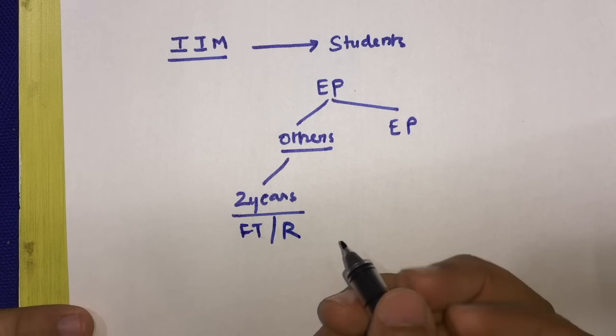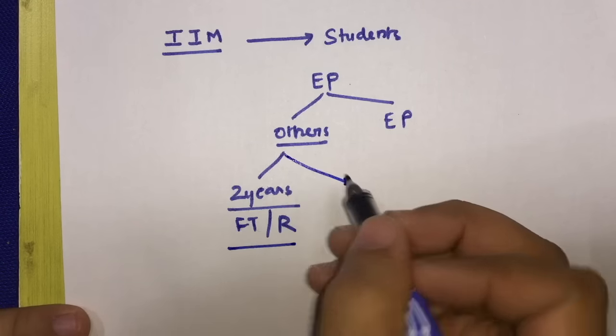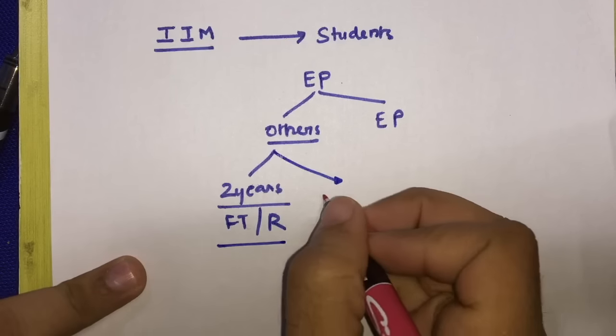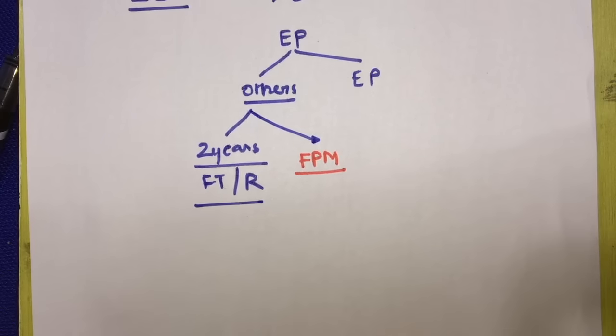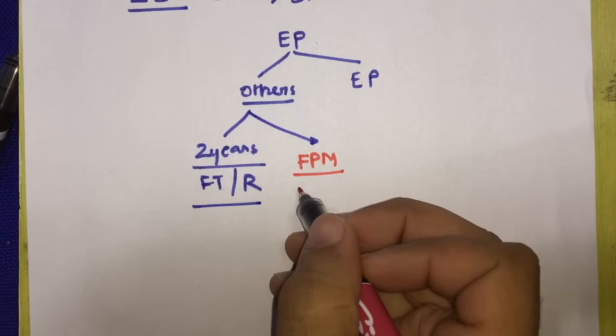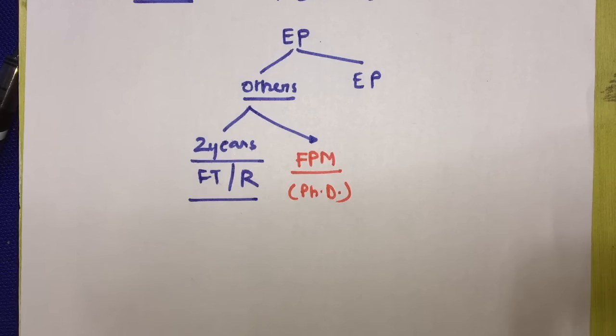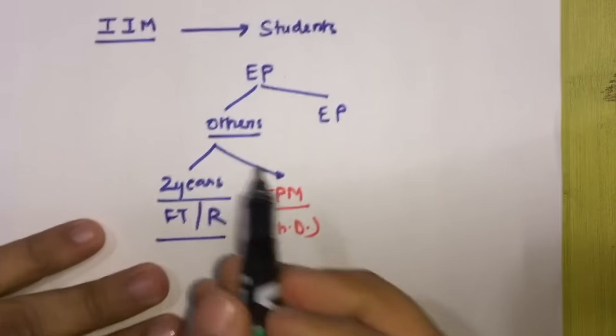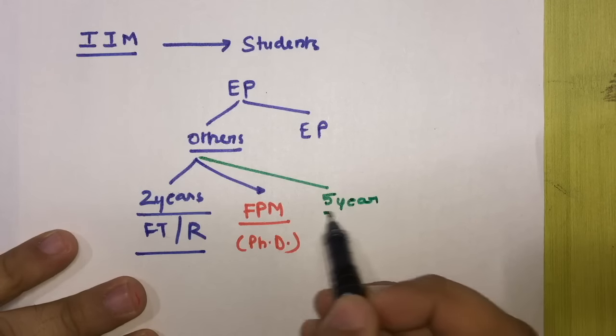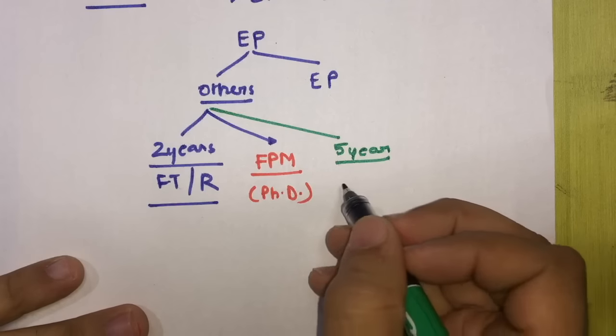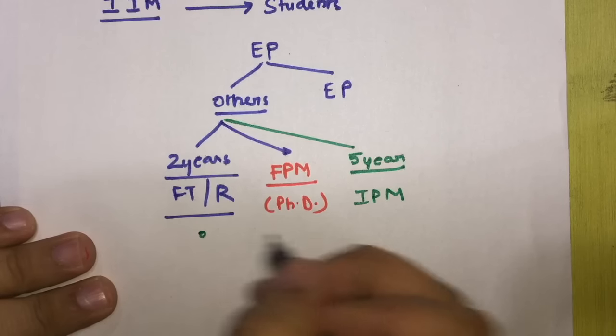The second one that we have is FPM. Chartered accountants should definitely pay attention to these two. I discuss these extensively in my class. FPM - Fellowship Program in Management, is somewhere considered equivalent to PhD. And third one is a five year integrated course in which they provide BBA plus MBA - Integrated Program in Management.